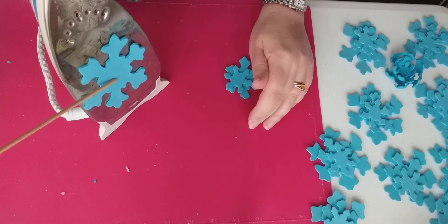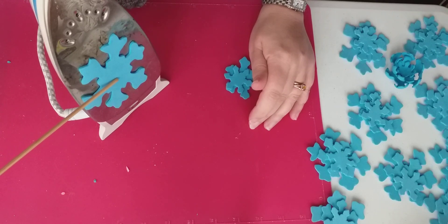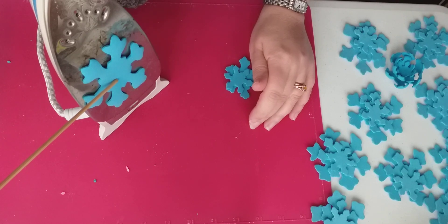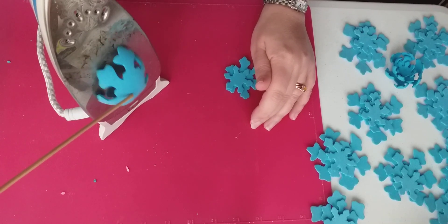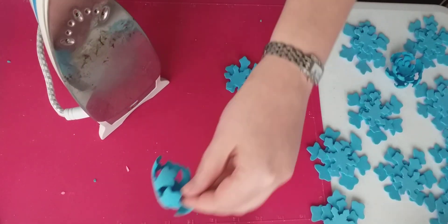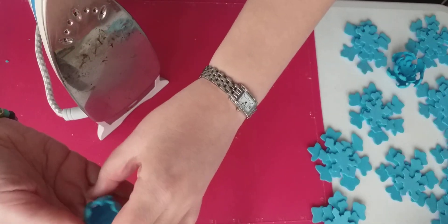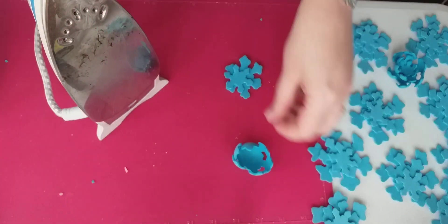So I've cut these out of craft foam and what I'm going to do is just put these on the iron. What actually happens here is these curl up to make our lovely icicle shapes. They curl to make them a lovely shape like this.